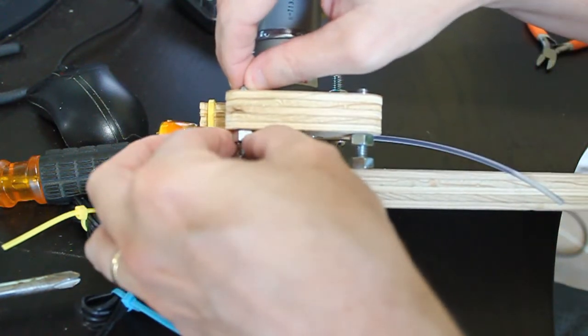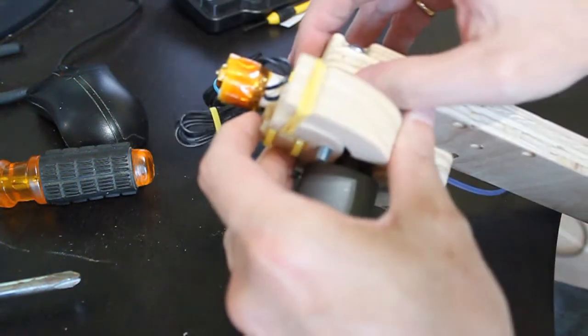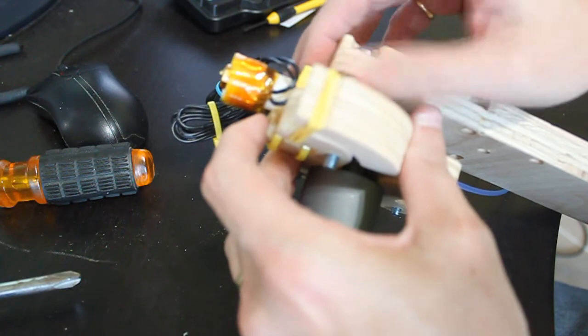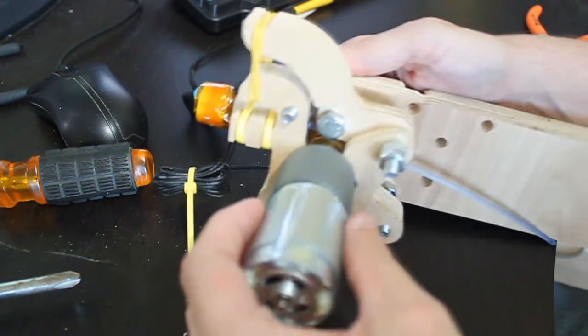Space the nut so that the extruder is as parallel to the Z-axis rail support as possible, and then attach the final nut at the end of the screws.